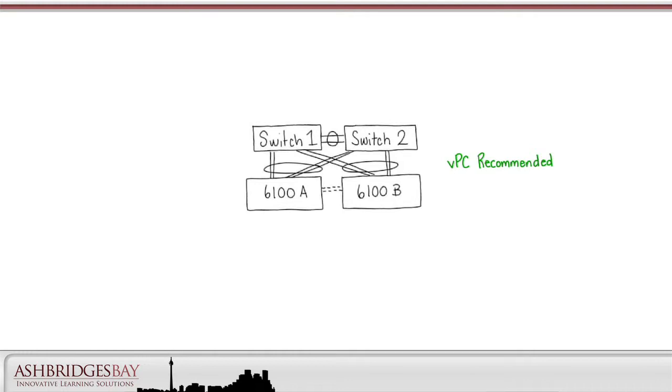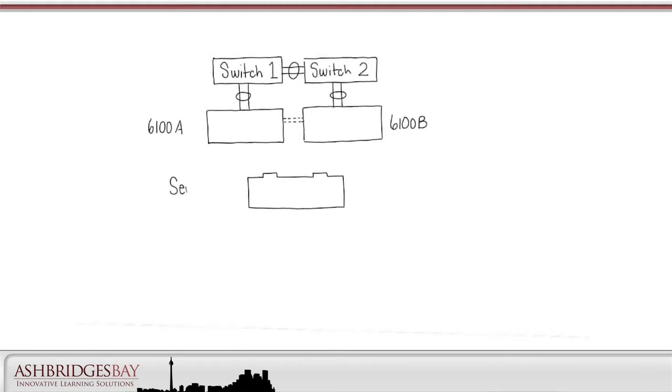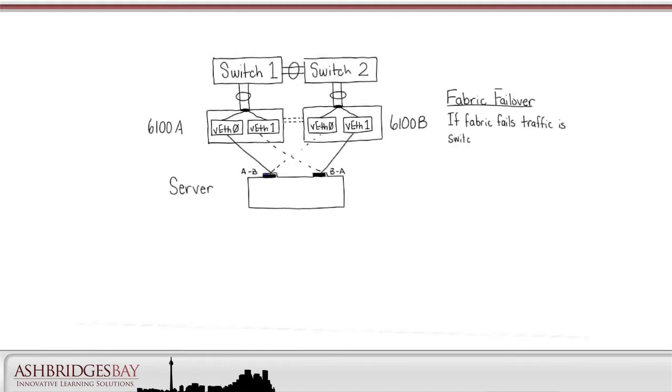Two final things to discuss: Fabric failover and pass-through switching. In this drawing, we have our two 6100s connected to 2 upstream switches. We have a single server with 2 service profile VNICs. The VNICs are configured for Fabric failover. That means that if there is a failure in one Fabric, the VNICs will switch to using the other Fabric. For example, if the server link for V Ethernet 0 on 6100A fails, then the traffic will be rerouted to Fabric B. The service profile VNICs will stay up. The failover will take 1 to 2 seconds, and the 6100B will send GARPs for the MAC addresses that were on the 6100A to speed network convergence.